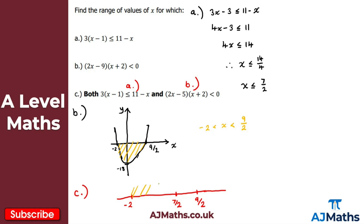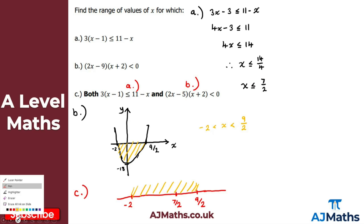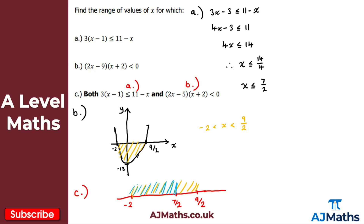Part b covers the region between -2 and 9/2. Part a says x must be ≤ 7/2, so everything to the left of 7/2. We're looking for the intersection — where both conditions are true simultaneously. That intersection is the region from -2 to 7/2.